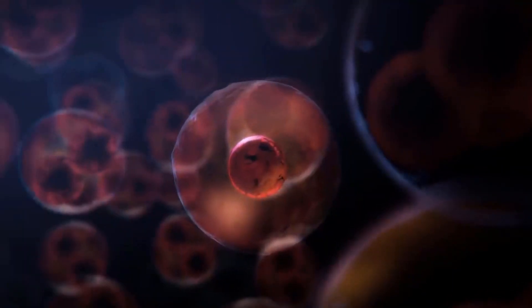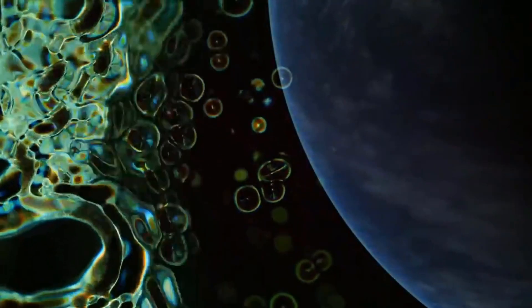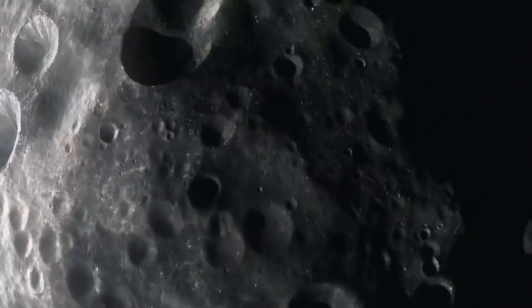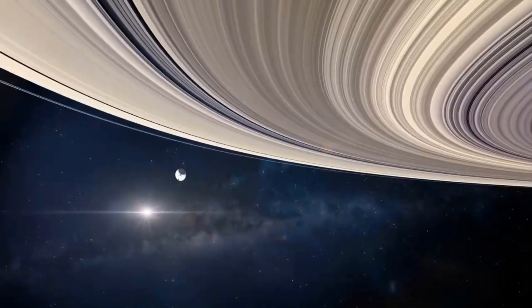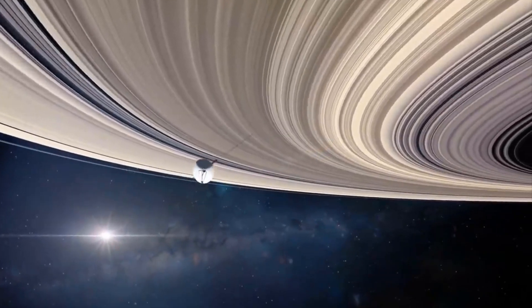Enceladus orbits Saturn at a distance of 148,000 miles between the orbits of two other moons, Mimas and Tethys. Enceladus is tidally locked with Saturn, keeping the same face toward the planet. It completes one orbit every 32.9 hours within the densest part of Saturn's E-ring.